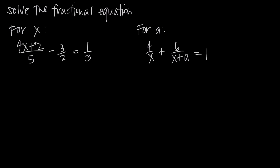Doing this first example to review a little bit: what you want to do when you have a fractional equation — meaning an equation with fractions involved — is look at all of your denominators and find a common denominator. So in this equation, we have denominators of 5, 2, and 3. We're going to be looking for a whole number common denominator that's the least common multiple of 5, 2, and 3.